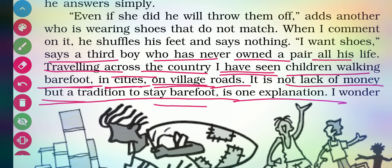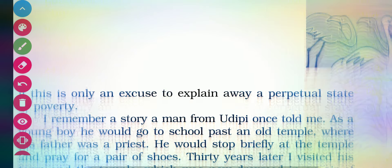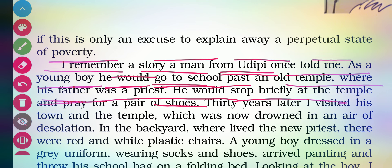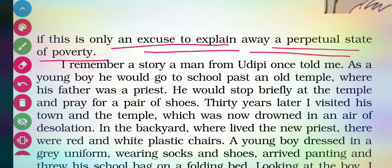But Anish Jung wonders if this is only an excuse to explain away the perpetual state of poverty — an unchangeable condition which cannot be changed — that is known simply as being poor.